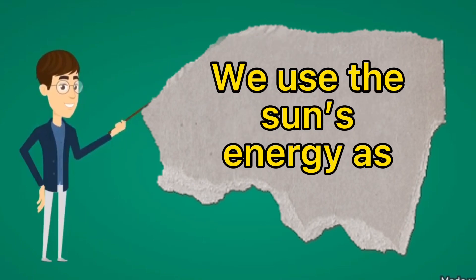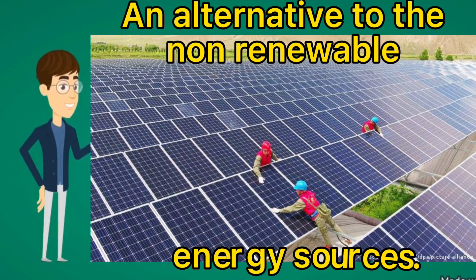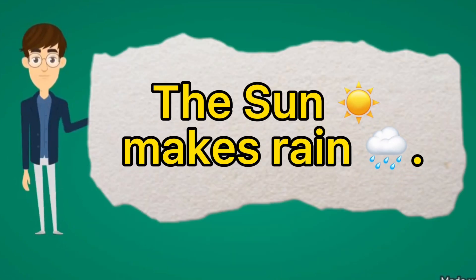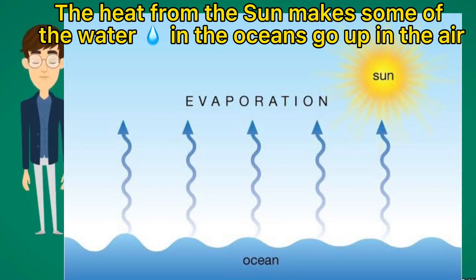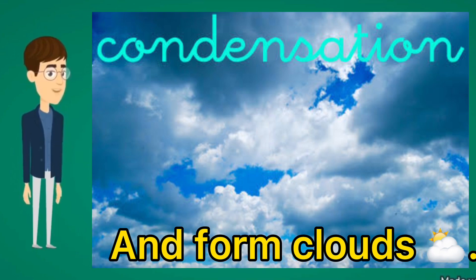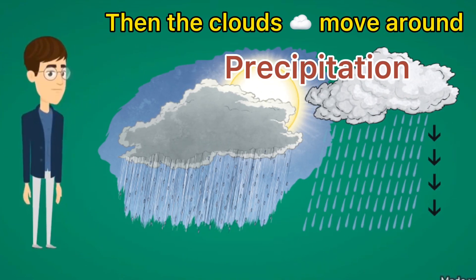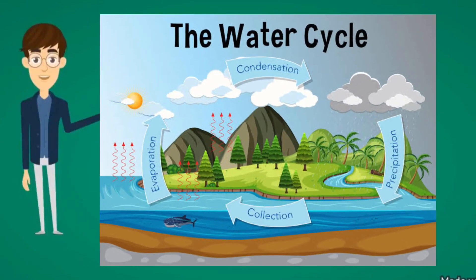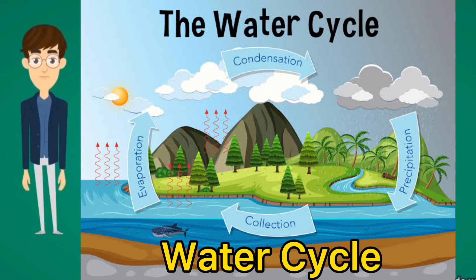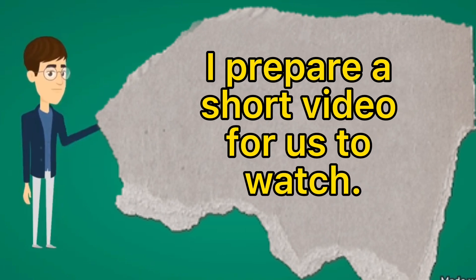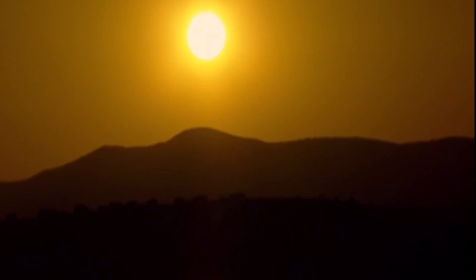We can use the sun's energy as an alternative to non-renewable energy sources. The sun also makes rain. The heat from the sun makes some of the water in the oceans go up in the air and form clouds. The clouds then move around and change into rain. This is what we call the water cycle, and I have prepared a short video for us to watch.